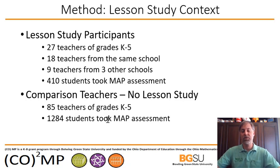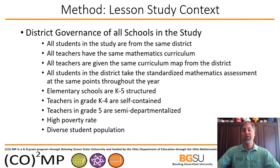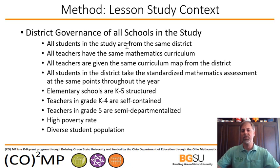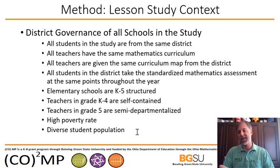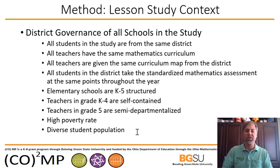There were 85 comparison teachers. The number of students in the lesson study group was 410, compared to the comparison group of 1,284 students. An important aspect of well-matched groups is ensuring consistent conditions. The district governance of all schools remained the same — for example, they had the exact same curriculum to follow and the exact same curriculum map by which they were supposed to proceed through the content.